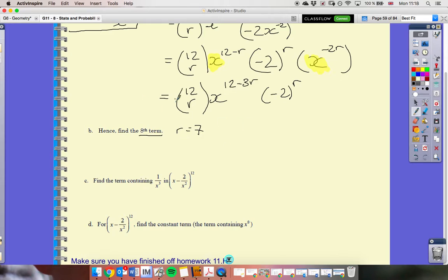Because remember, when we use the binomial expansion, we always get one more term than the exponent. So, let's find term 8, where r is 7. So, 12 choose 7, x to the power of 12 minus 3 lots of 7, and negative 2 to the power of 7.